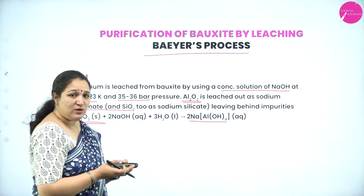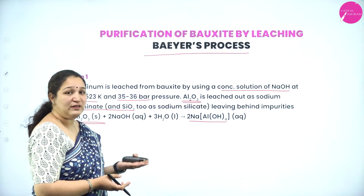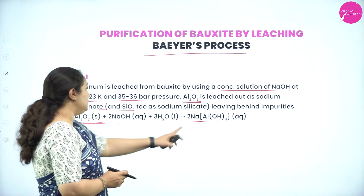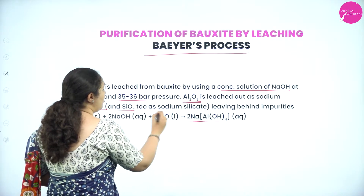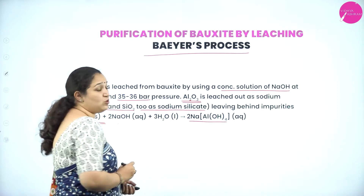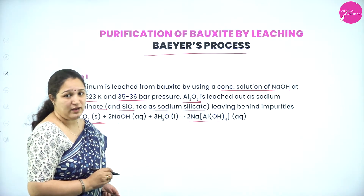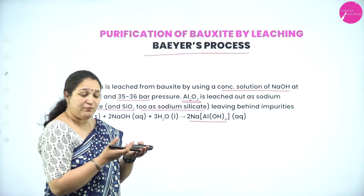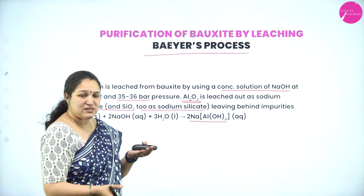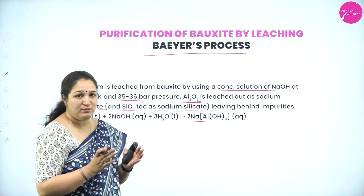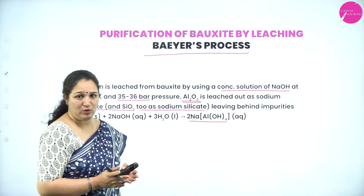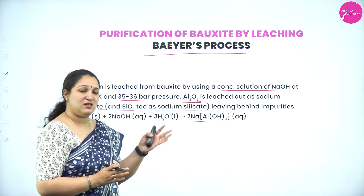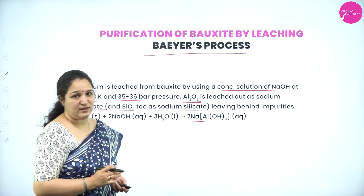We then filter it out. However, along with aluminium, silicon dioxide also goes into solution as sodium silicate, so we must be careful. After filtering, the filtrate contains the aluminium metal as sodium aluminate, and the impurities are removed and discarded.